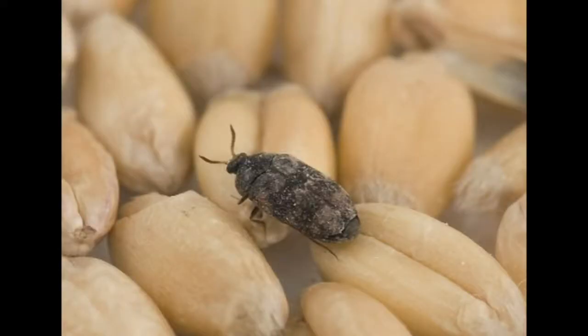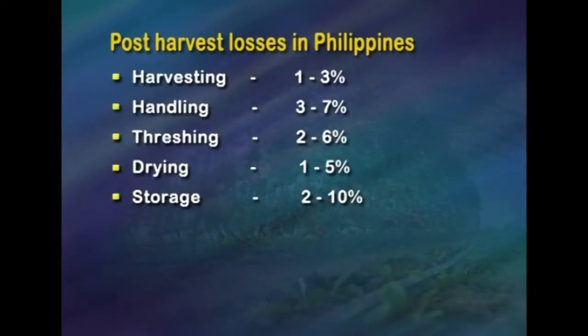In developing countries, in spite of new storage methods, losses of up to 9.3 percent have been recorded in India. The seed stock, which constitutes about 10 percent of total production, also suffers from 1.2 to 5 percent damage. It has been estimated that 3 to 5 percent of grains in storage is destroyed by insects and pests. The International Rice Research Institute estimated post-harvest losses in the Philippines as: harvesting loss 1 to 3 percent, handling 3 to 7 percent, threshing 2 to 6 percent, drying 1 to 5 percent, and storage 2 to 10 percent.